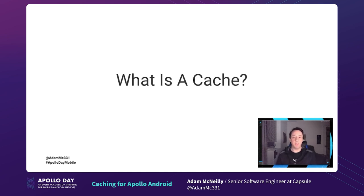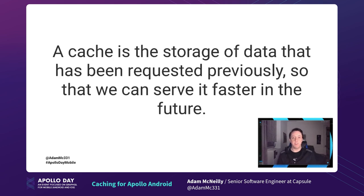Whenever I give a talk, I like to make sure everyone has the same baseline at the start to make sure we all understand the topic clearly. So if you're unfamiliar with caching, let's talk about what that means. A cache is the storage of data that has been requested previously so that we can serve it faster in the future. So if you have a screen on your app that shows data that's unlikely to have changed, there's no reason to make a new network request every time when we can take the response of that first request, save it, and then surface that for the user next time they visit that same page.